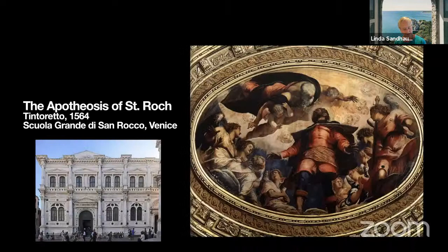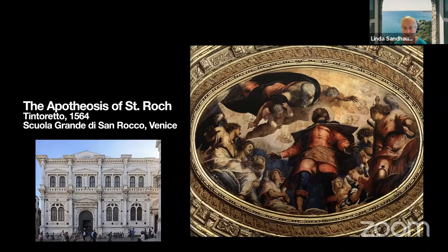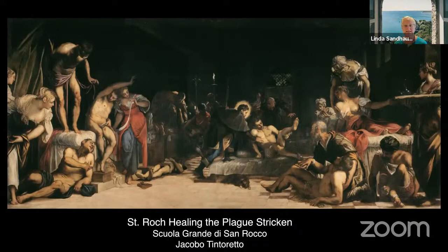Tintoretto painted the ceiling of the Grand Scuola San Rocco in Venice in 1564 to honor Saint Roque. In this elliptical ceiling painting, the heroic figure of the saint is surrounded by choirs of angels. Saint Roque, as a Christian pilgrim, traveled throughout Italy healing plague sufferers and eventually became infected himself — healed by a dog who licked his sores and brought him bread. As living proof one could survive plague, he was often called upon by sufferers. Another painting in this room, Saint Roque Healing the Plague Stricken, shows the saint with a halo reaching out to touch one of the plague victims, with large bulbous sores typical of bubonic plague visible.